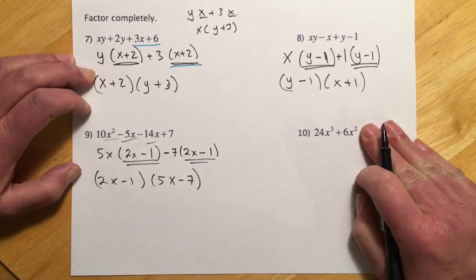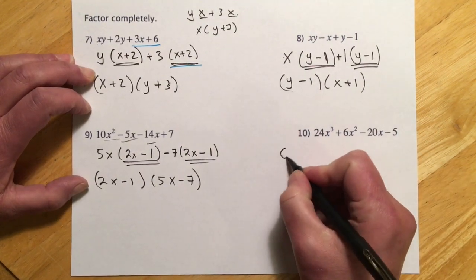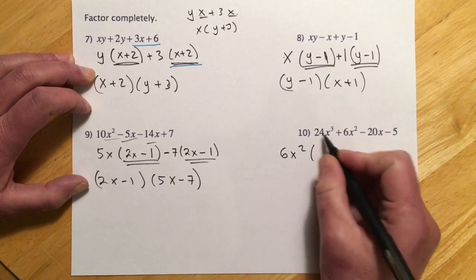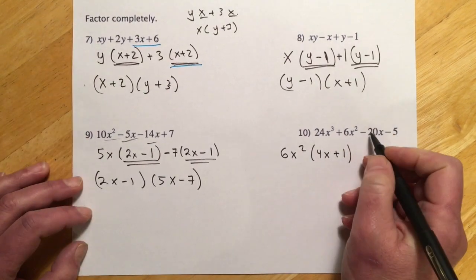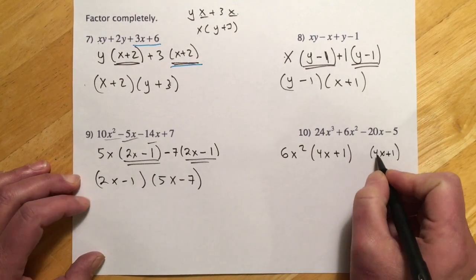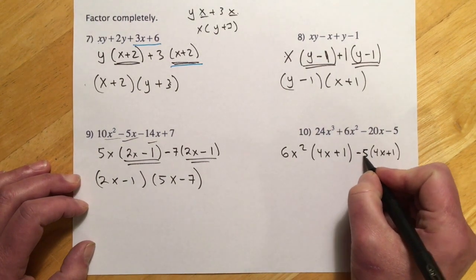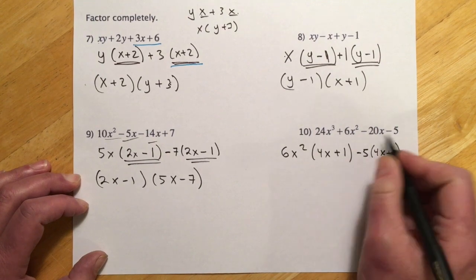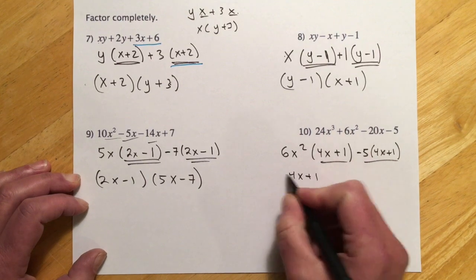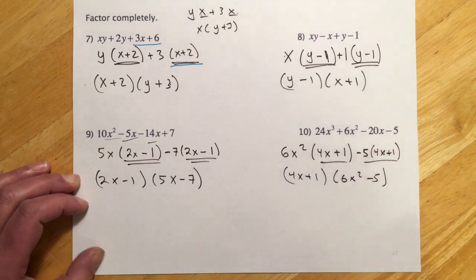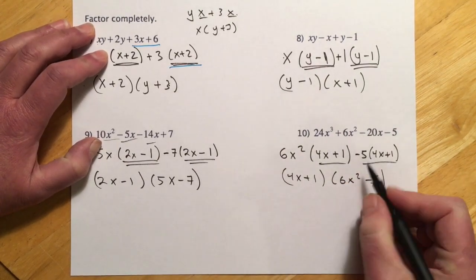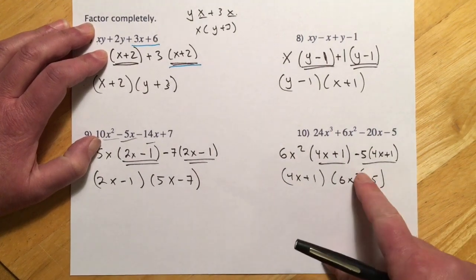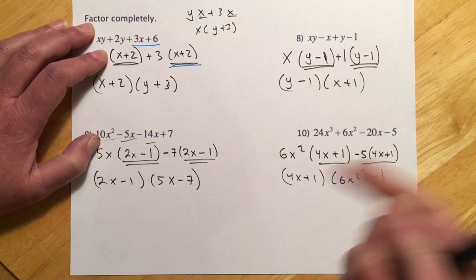For the last worked example, the best I can do from the first two terms is 6x squared, since 6 goes into 24 four times, leaving 4x plus one. I need to get another 4x plus one from the last two terms. What do I multiply 4x by to get negative 20x? That's negative five. Double-checking: negative five times one gives plus one — that works. So the GCF is 4x plus one, and it comes out front leaving 6x squared minus five behind. Note that 6x squared minus five has potential to keep factoring, something we'll look at in later sections.